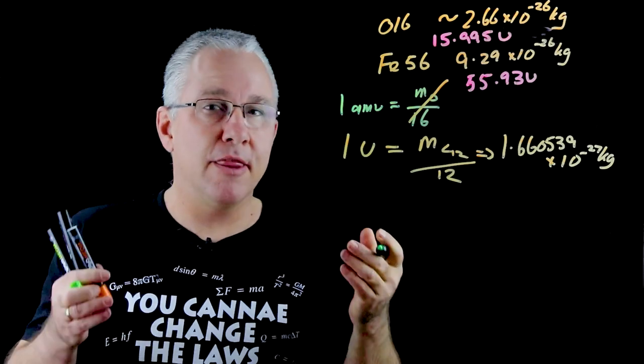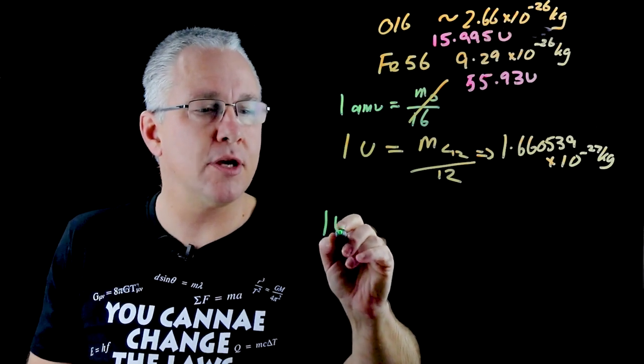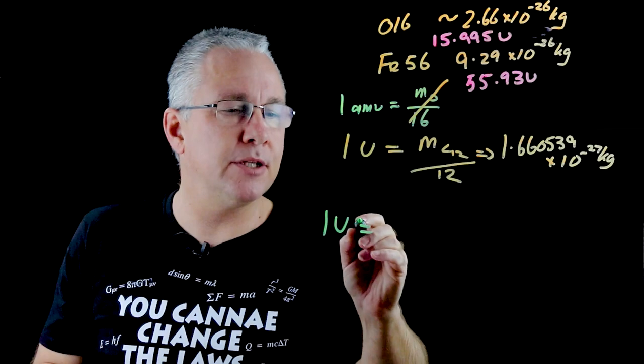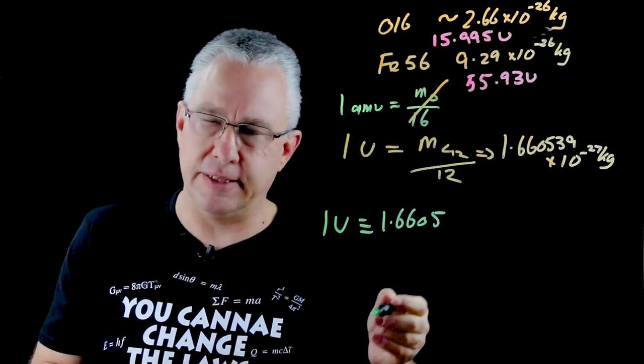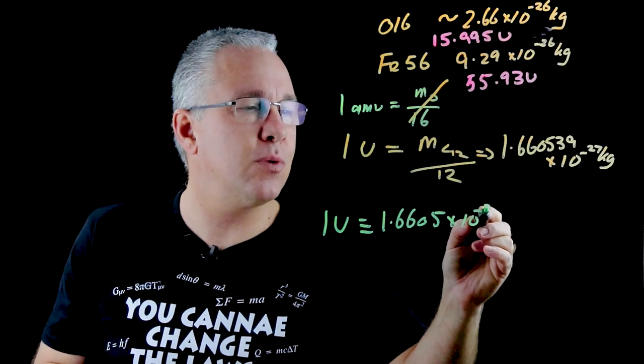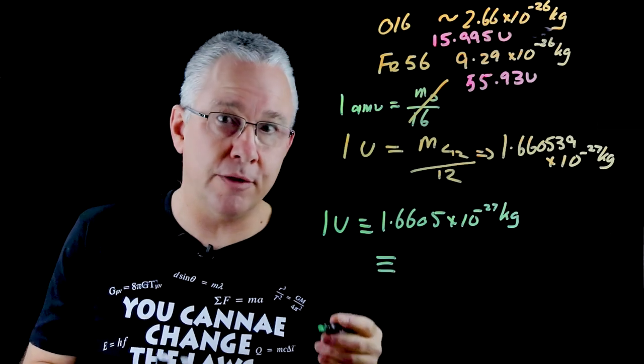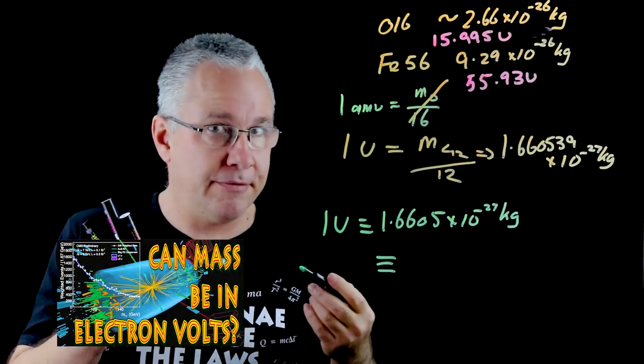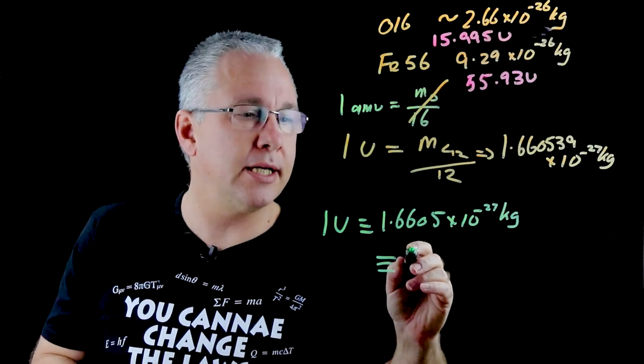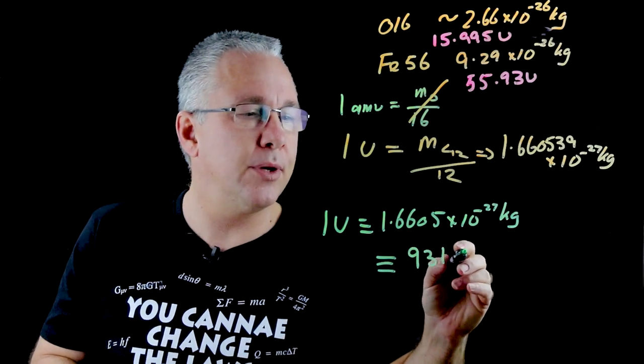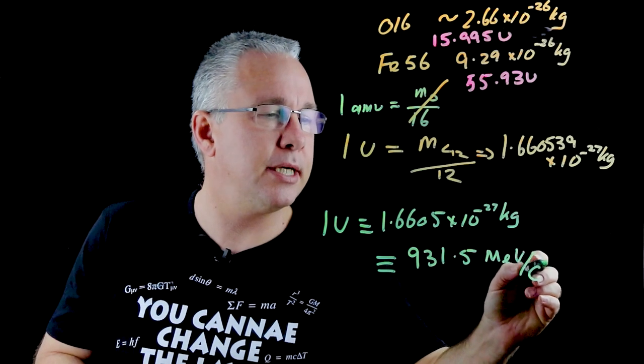So now we have three different versions of mass. We have our one atomic unit that's equivalent to 1.6605 to five significant digits by 10 to the power of negative 27 kilogram. And it is also equivalent to if we use our electron volt per c squared, I made a video on that as well so have a look at that,